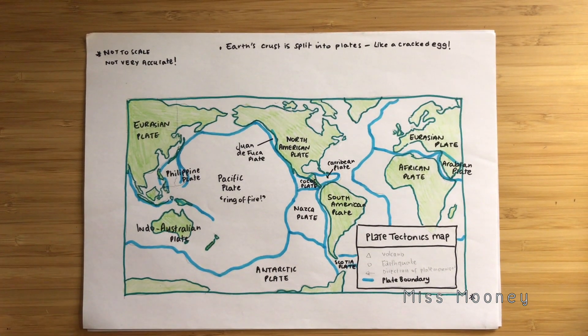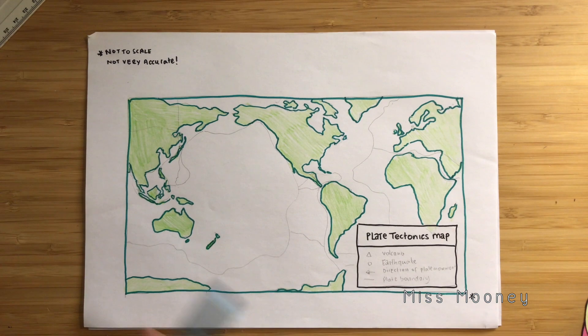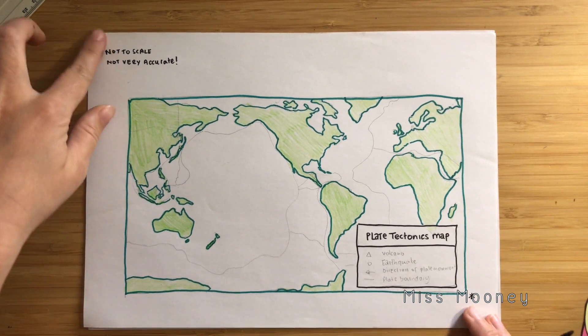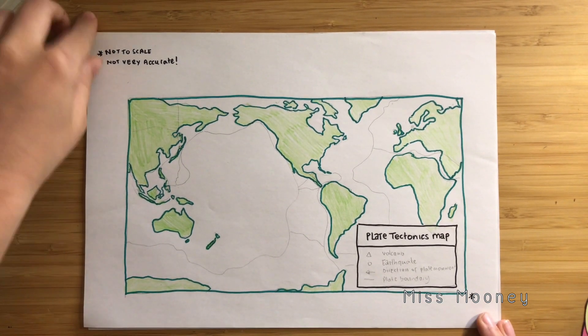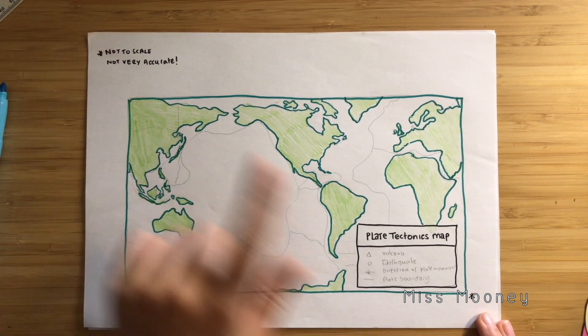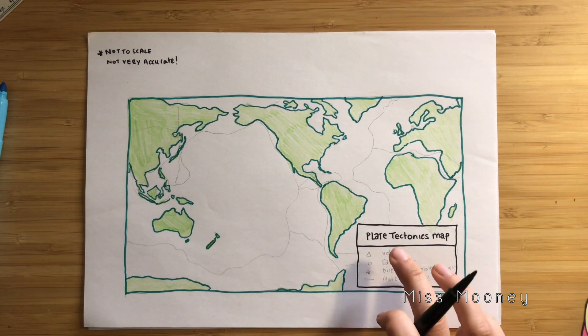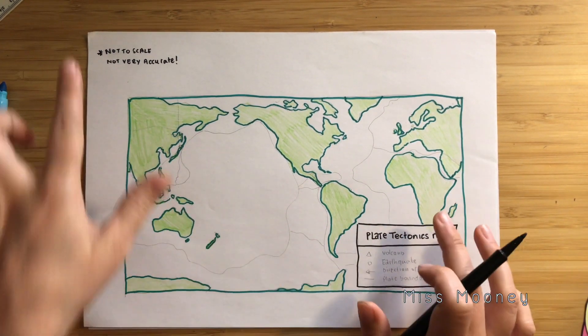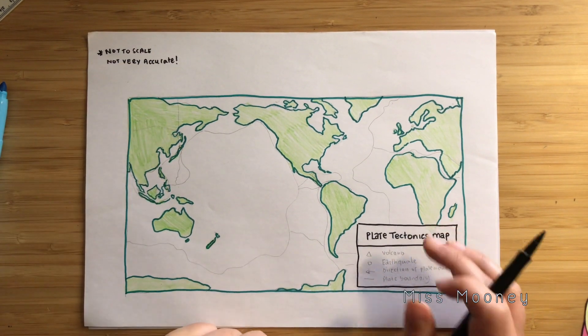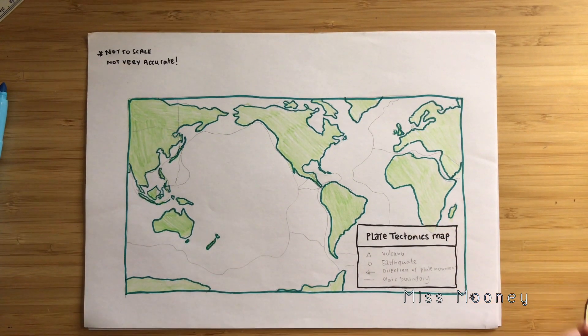Let's start with a fresh world map. Just to point out the map isn't to scale and it's hand drawn so it's not particularly accurate. There may also be a few countries missing here and there, so don't worry — we just need an overview of the key tectonic plates.